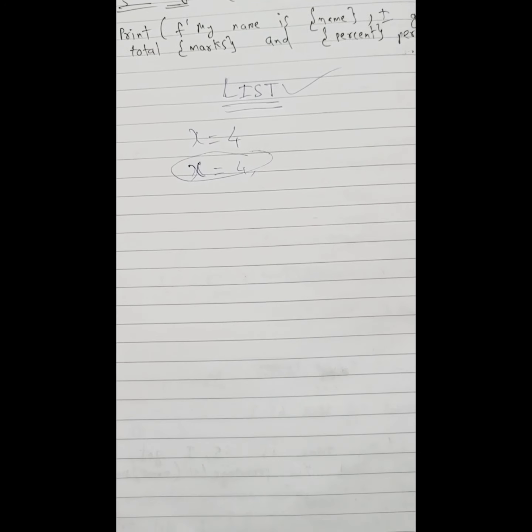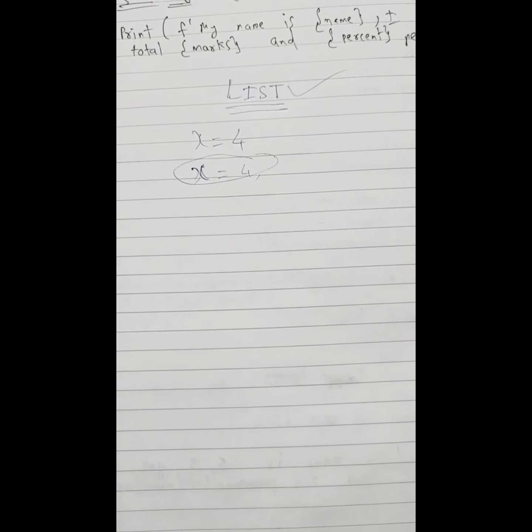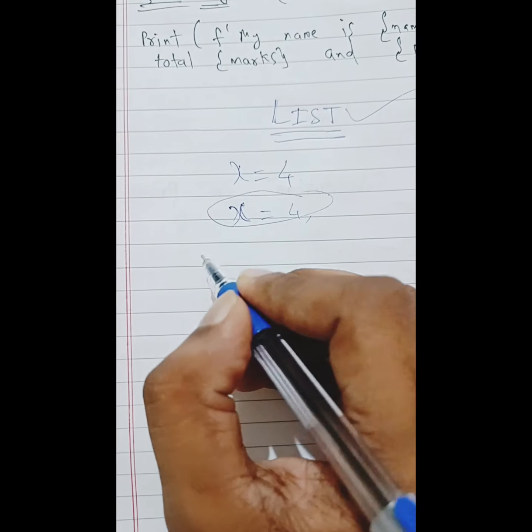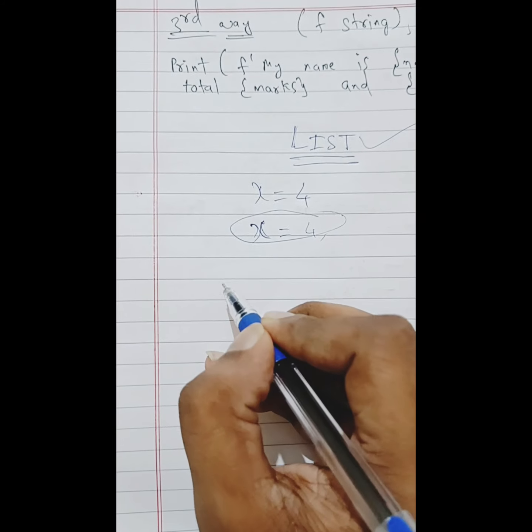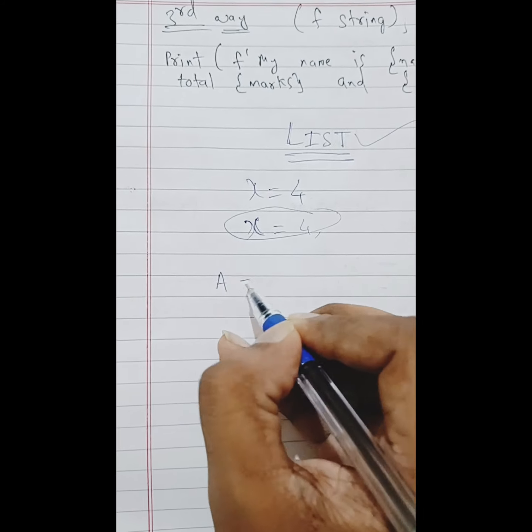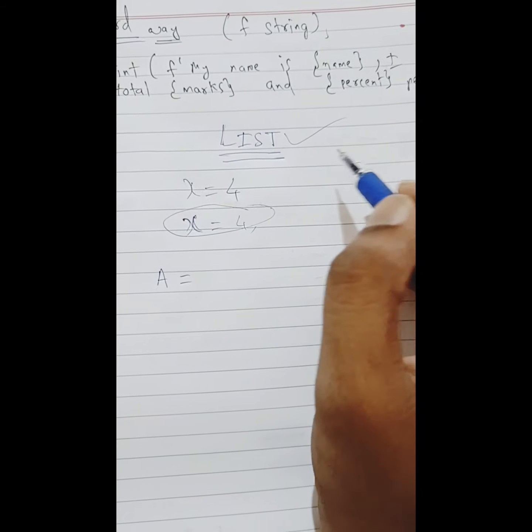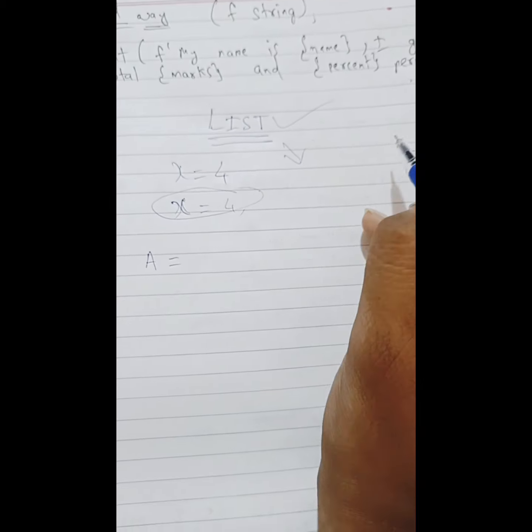To overcome this issue of assigning multiple values, we will be using list. List is simply objects - a kind of sequence of objects we can give input to some random variable. For example, consider a name.